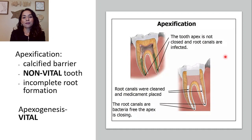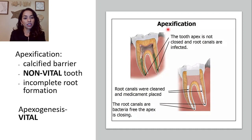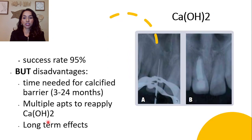Before regenerative endodontics, apexification was used. In apexification, a calcified barrier is formed for a non-vital tooth with incomplete root formation — the tooth apex is not closed and the root canal is infected. The root canal is cleaned and a medicament is placed. In contrast, apexogenesis deals with vital teeth, so it won't be the focus of our discussion.